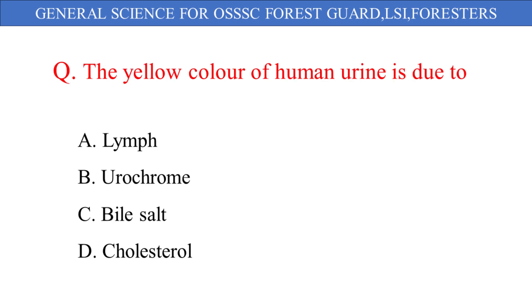The yellow color of human urine is due to: A. Lymph, B. Urochrome, C. Bile salt, D. Cholesterol. And the correct answer is option B: Urochrome.